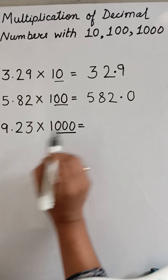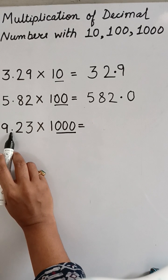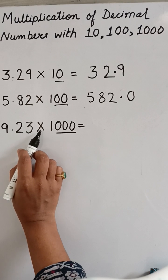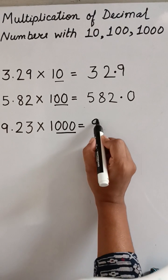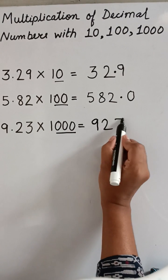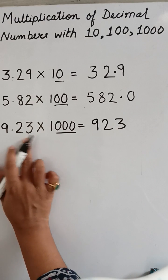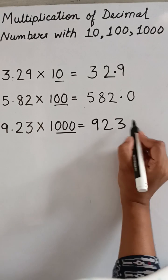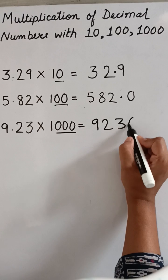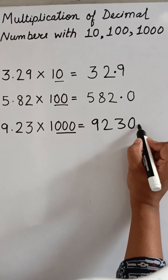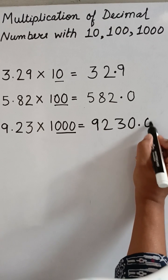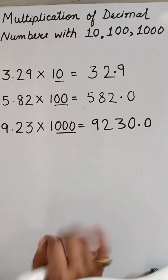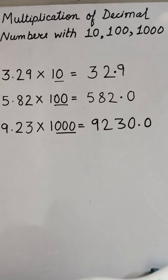Now the third sum is 9.23 × 1000. So in 1000 we have three zeros. That means the decimal point will also shift three digits to the right-hand side. So let us write the number: 923. After the decimal point we have only two numbers, so to make it three we have to add a zero here. Then we have to put the point and then write zero. So in this way, you have to multiply decimal numbers with 10, 100, and 1000.